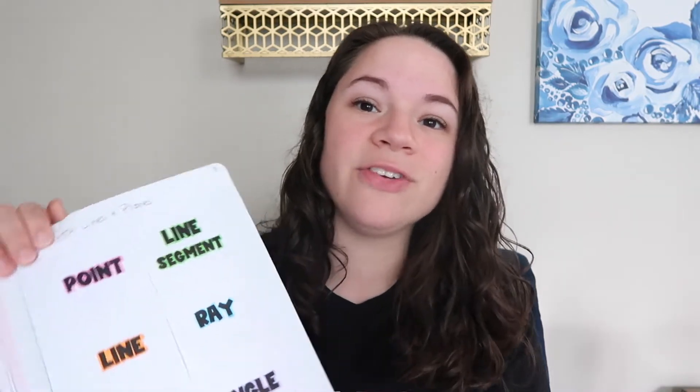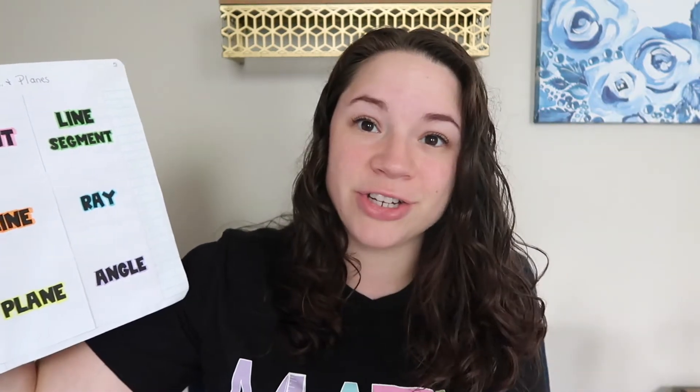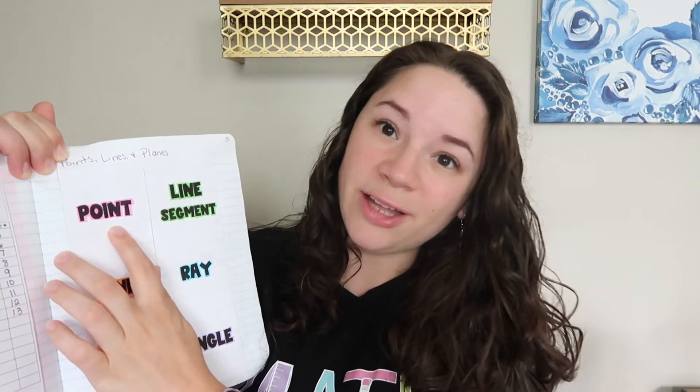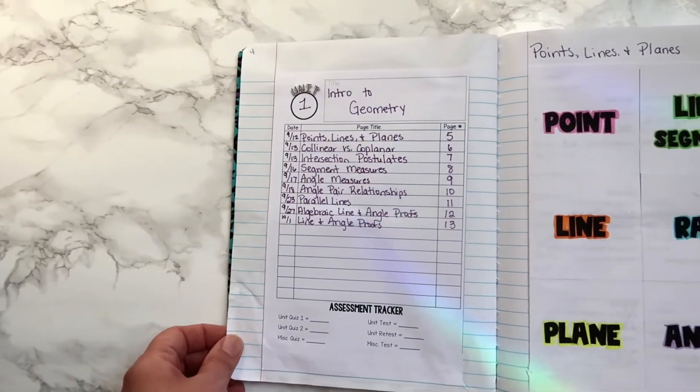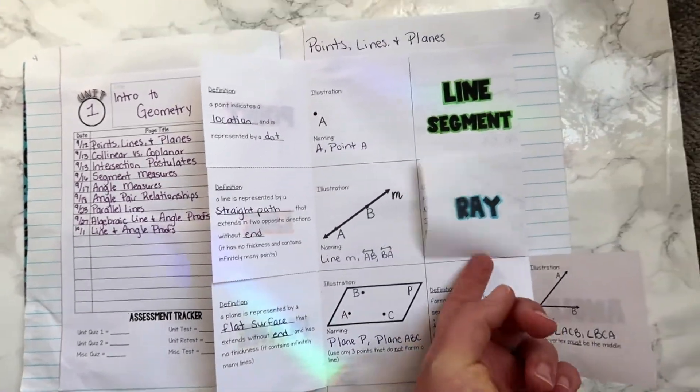Starting out with introduction to geometry, our first official lesson in this unit is on points, lines, and planes — basically your undefined terms. We have a little six-door foldable with the main vocabulary words, and under each flap we have the definition, illustration, and how to name that figure. I include point, line, plane, line segment, and ray, and then I also cover angles on that same day.